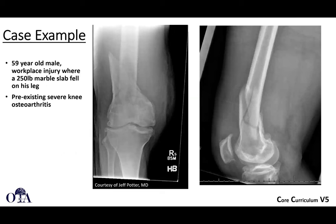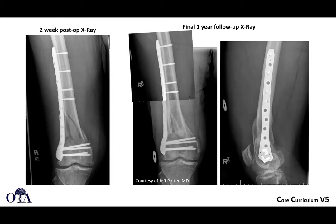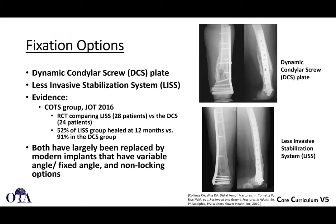Here's a case example: a 59-year-old male with a workplace injury from a marble slab falling on his leg, with pre-existing osteoarthritis. He was treated with open reduction internal fixation utilizing far cortical locking technology, and the fracture went on to heal with good alignment. The LISS system is also one of the first periarticular locking plates still in use, with self-drilling unicortical screws proximally and all locking screws distally.